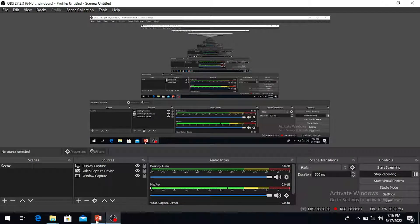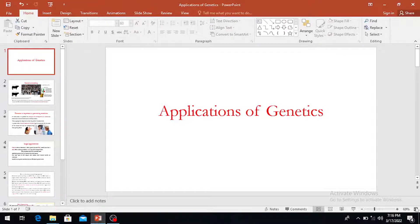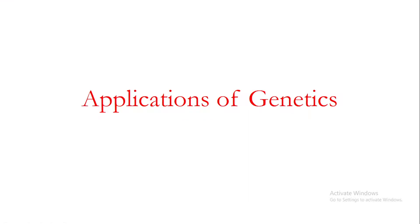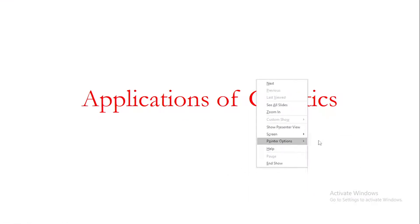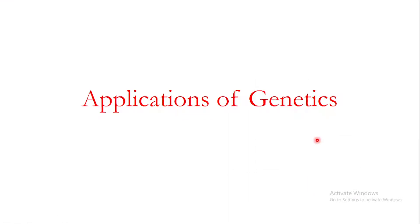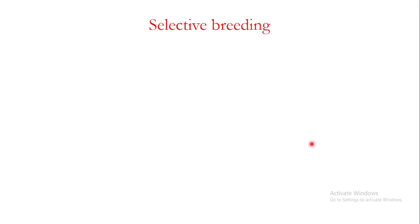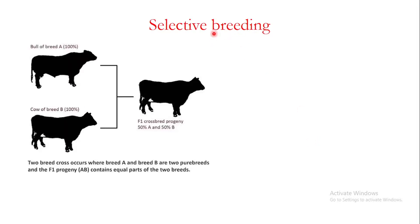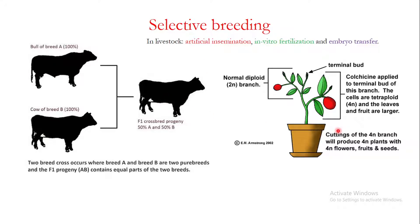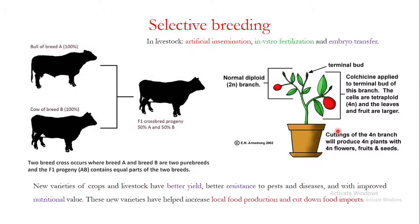Bismillah ar-Rahman ar-Rahim and welcome back to this next video. This is Part Two on the application of genetics. In the previous video, I told you about selective breeding — one of the important applications of genetics — and how you can produce desirable animals and plants using different techniques of selective breeding.